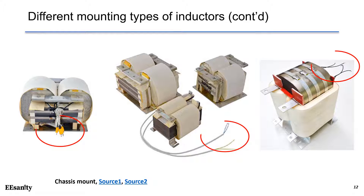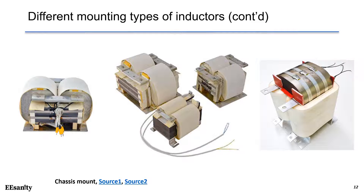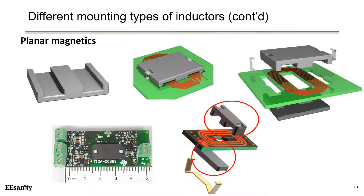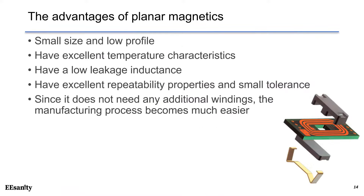You may notice small wires coming out of the inductor — these are thermistors or thermocouple cables used to monitor temperature in real time. Another mounting type is planar magnetics, a low-profile design often used for high-density power converters. PCB traces on multiple layers are used as windings to carry current, and two pieces of planar cores are clamped together to close the magnetic path. Planar magnetics can be used for inductors, transformers, flyback transformers, and more. Advantages include small size, low profile, excellent temperature characteristics, low leakage inductance, excellent repeatability, and small tolerance.